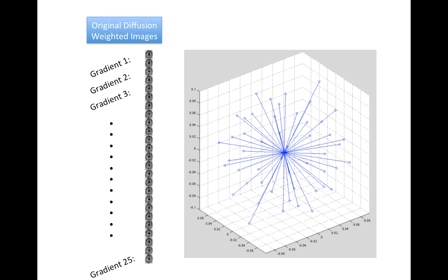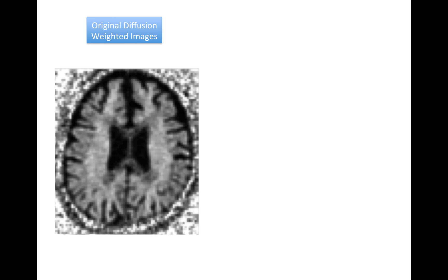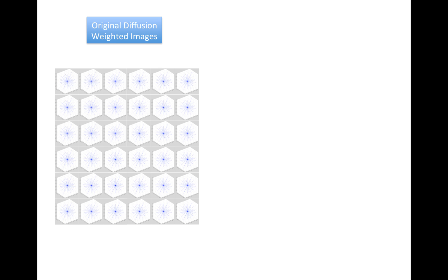And you have to remember, there's 25 gradient directions, so there are 25 imaging volumes for each of these directions. Another way to look at it is that you have a slice. So you're measuring at every voxel of the brain. So you're really having a diffusion profile at each of the voxels of the brain. So this is an extremely large dataset.